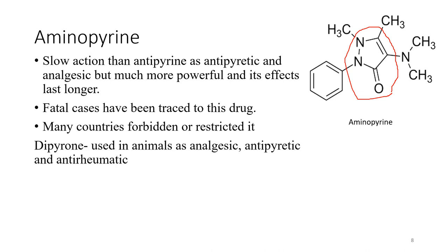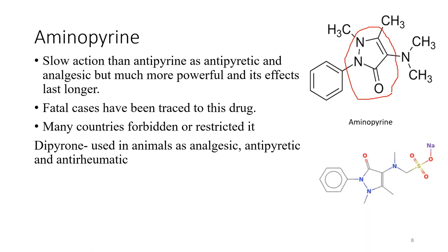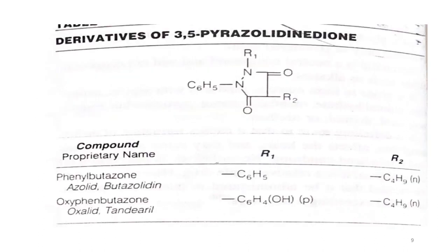Dipyrone is also used in animals as an analgesic, antipyretic, and anti-rheumatic agent. In the structure of dipyrone, a thio group is present as well as sodium.